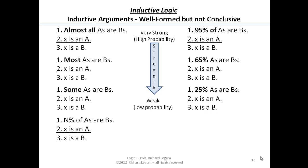25% of A's are B's, X is an A, therefore X is a B. That's a pretty weak connection. I don't know that that one we want to put any faith in, but notice what's happened.